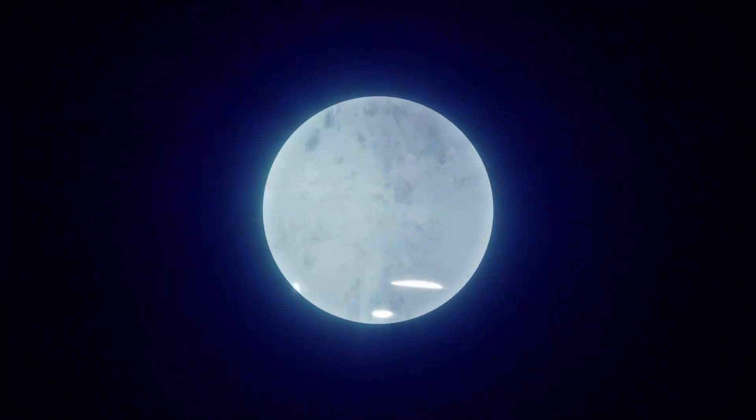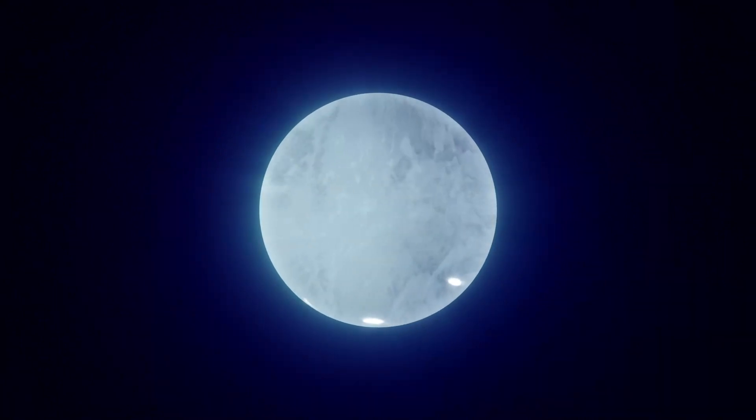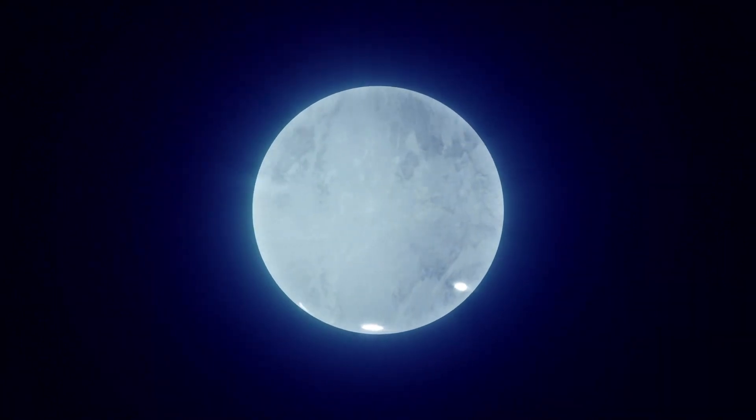This is J0030, a type of dead star called a pulsar, located about 1,100 light-years away in the constellation Pisces.